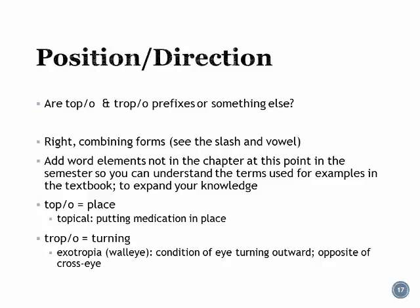Topo and tropo are not prefixes but combining forms, because they have a slash and a vowel. Topo means 'place,' so topical means we're putting the medication in place. Tropo means 'turning,' so exotropia is a condition where the eye is turning outward — otherwise known as wall-eye, the opposite of cross-eye.